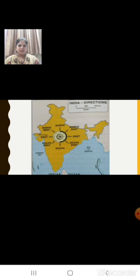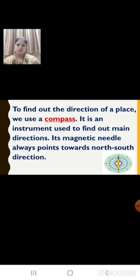We can locate any place more accurately with the help of these intermediate directions. If you want to go to a particular place but don't know the exact direction, you can find out the direction using a compass. A compass is an instrument used to find out the main directions — its magnetic needle always points towards the North and South direction, so it helps you find out the direction in which you have to go.